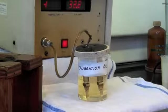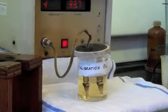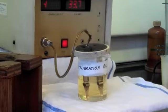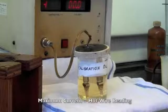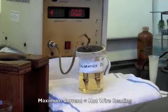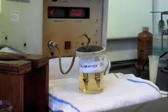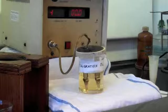This maximum current that the wire can take before burning out is locked on the display and it's taken as the hot wire reading. Three such determinations are taken and the average value is considered to be the quench speed of the oil.